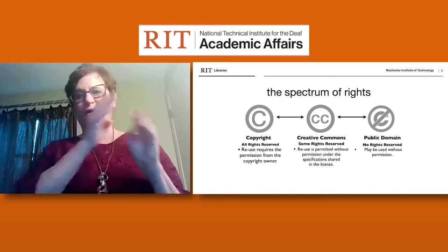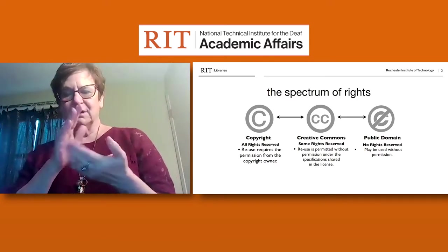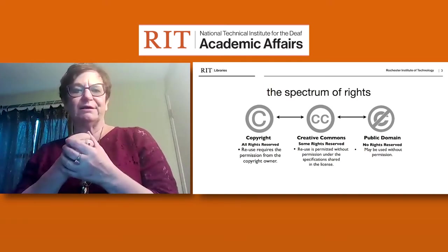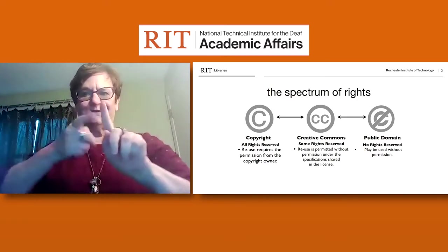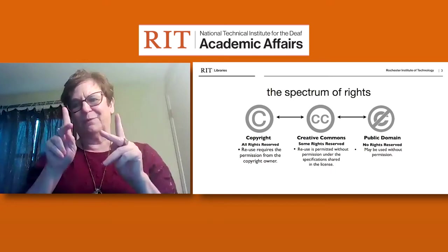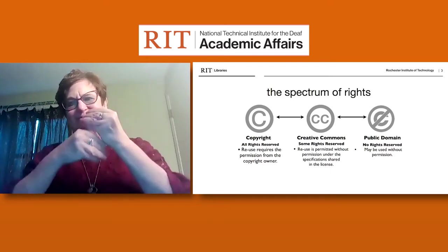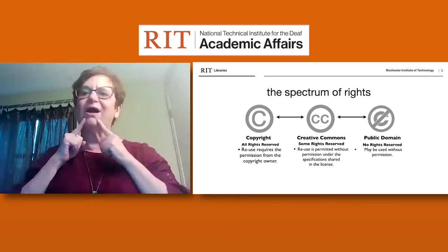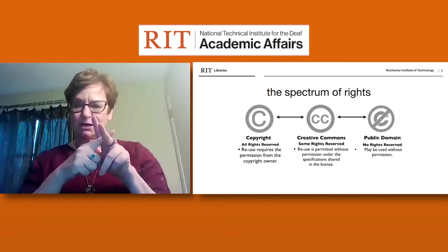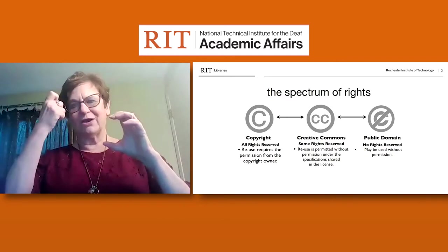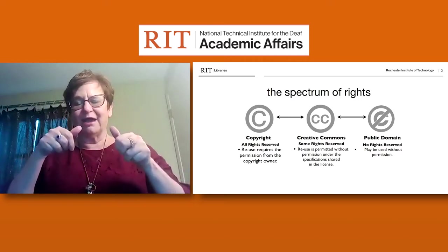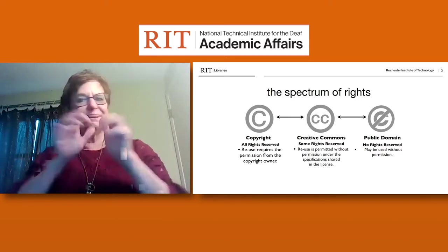This slide shows you the spectrum of the different licenses available. We have works protected by copyright, which requires permission if you want to use someone's work. It is sometimes tough for people who want to use an original work and add to it, as they have to work within the confines of copyright. There's a new revolution happening with Creative Commons licensing because it allows the creator to choose between different licensing options, allowing people to share and reuse work without asking for permission.